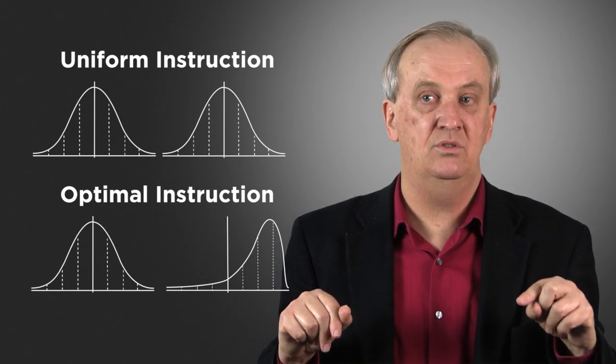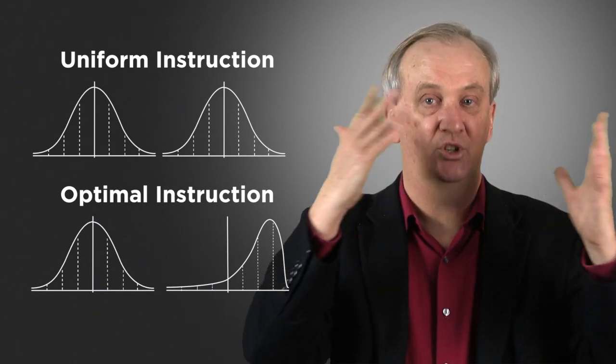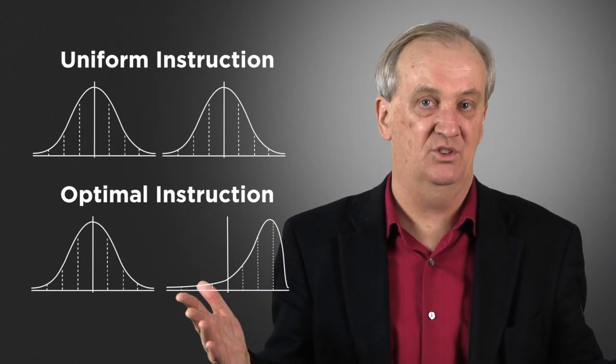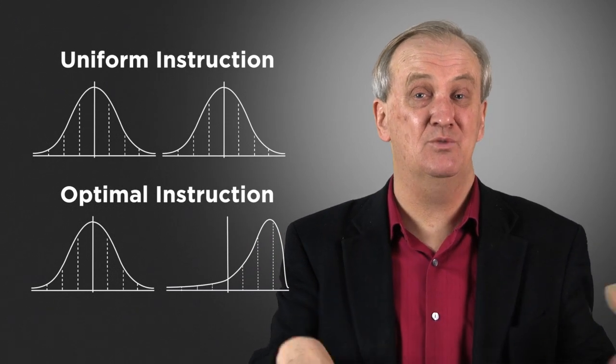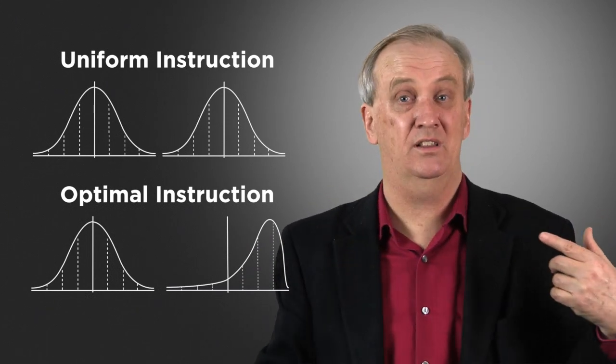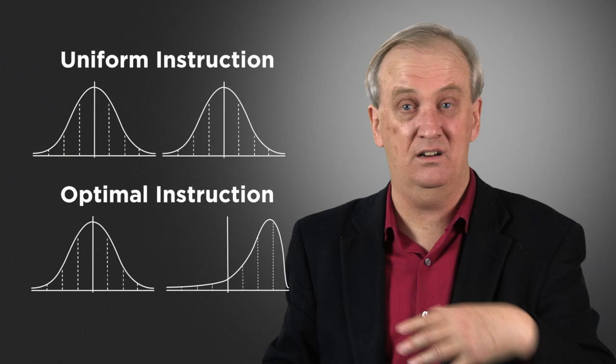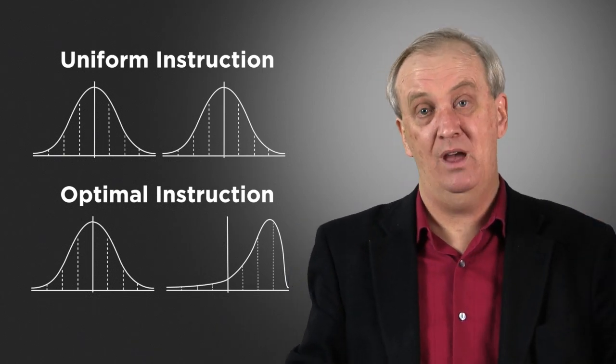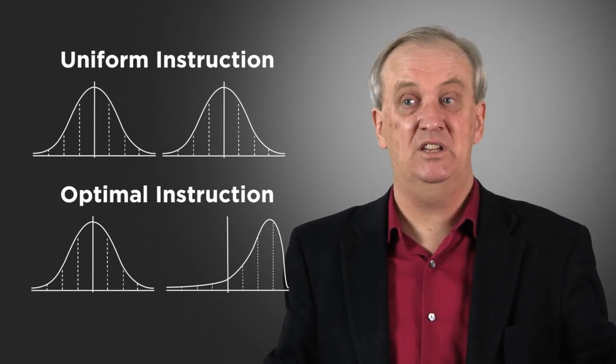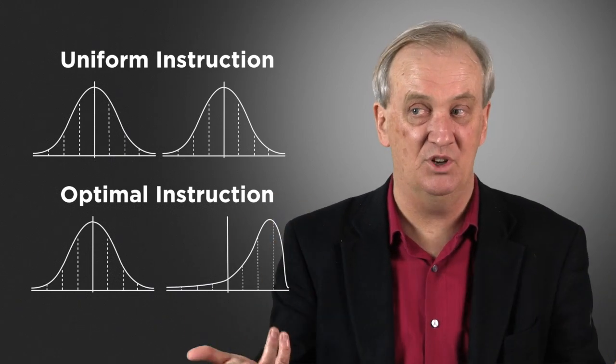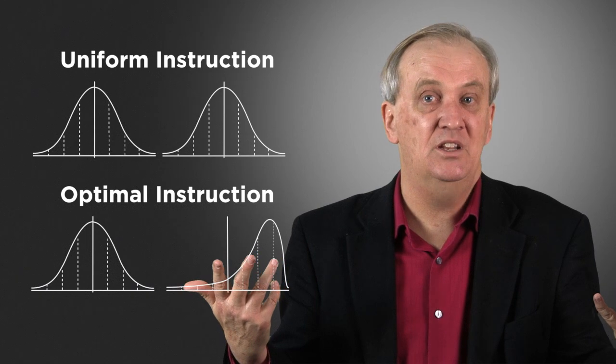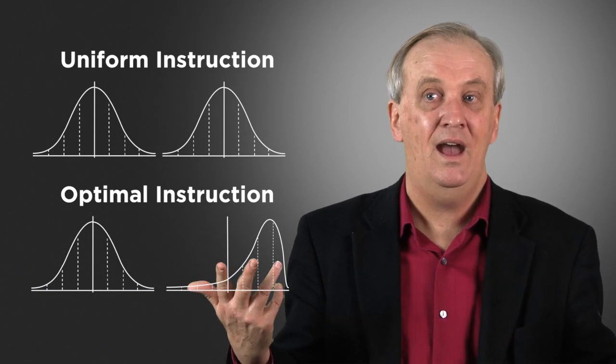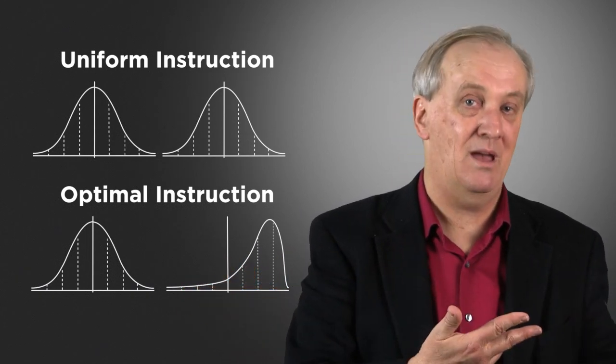Let's say students come into the classroom with aptitude spread across a normal distribution curve. We give them all exactly the same instruction, which is what we did when the teacher stood at the front of the classroom, when we had the standardised test at the end, where we gave them the textbook and it wasn't adaptive and it wasn't personalised. What's going to happen at the end is achievement is going to look exactly the same as the aptitudes that students came in with.